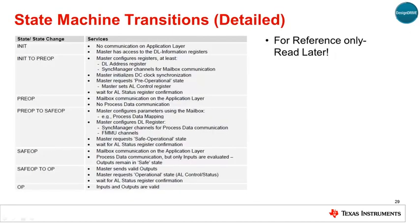This table shows a more complete listing of behavior and services available in each state of the EtherCAT state machine. This is shown only as a reference.